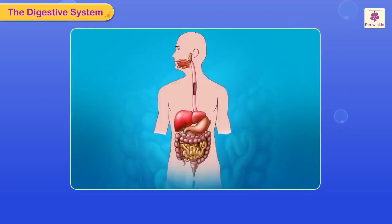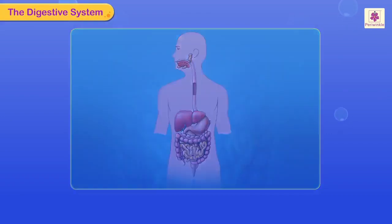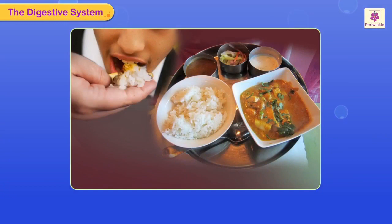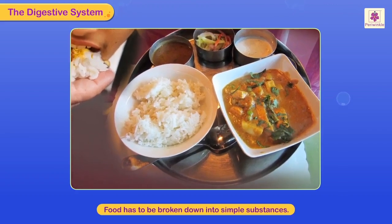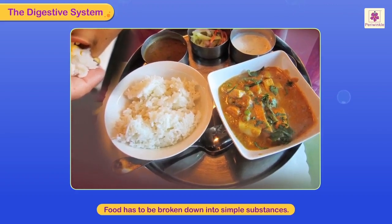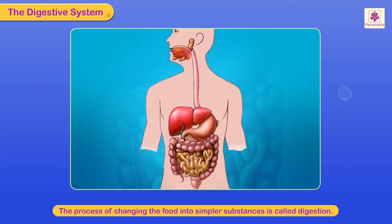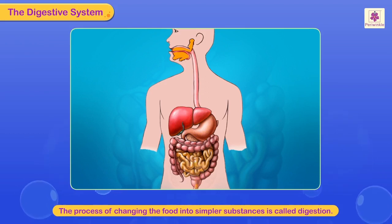The digestive system — our body cannot use the food in the form we eat it; it has to be broken down into simple substances. This process of changing the food into simpler substances is called digestion.